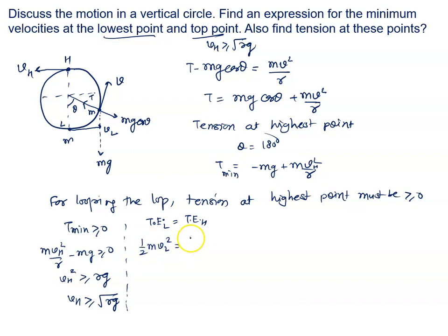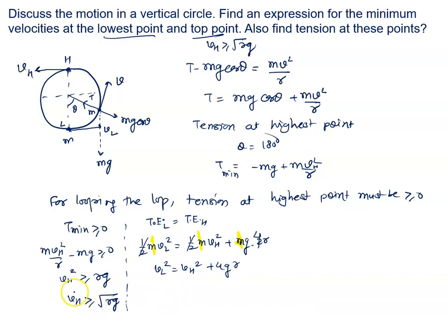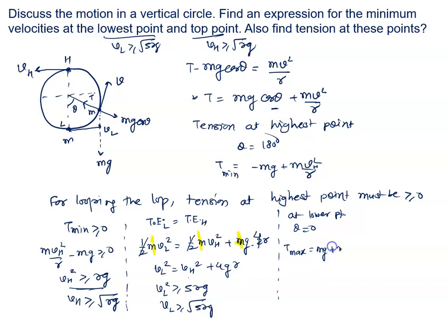For looping the loop — for completing any vertical circle — the tension at the highest point must be greater than or equal to zero. If tension becomes zero, that is the critical condition; if tension goes negative, the object will not complete the circular loop. So T minimum ≥ 0 means: MVh²/R − Mg ≥ 0, which gives Vh² ≥ Rg, or Vh ≥ √(Rg). This is the minimum velocity required at the highest point to complete the vertical circular loop.